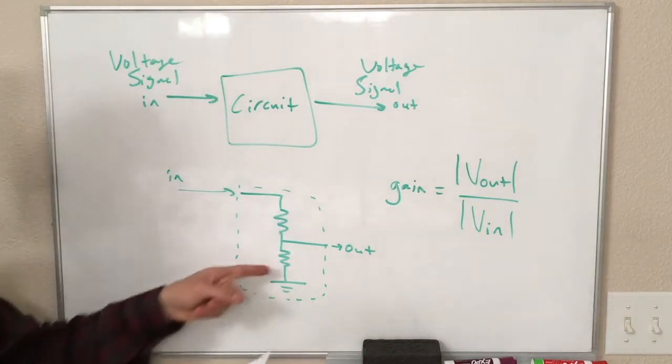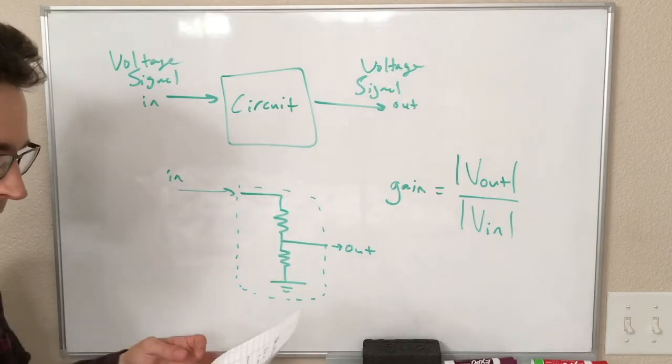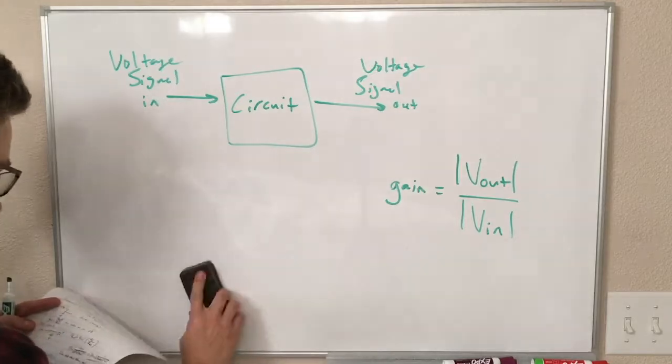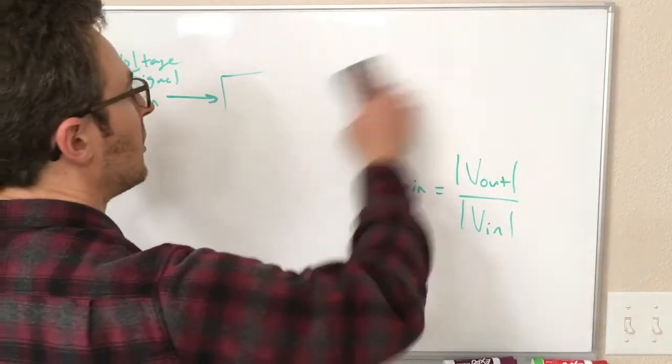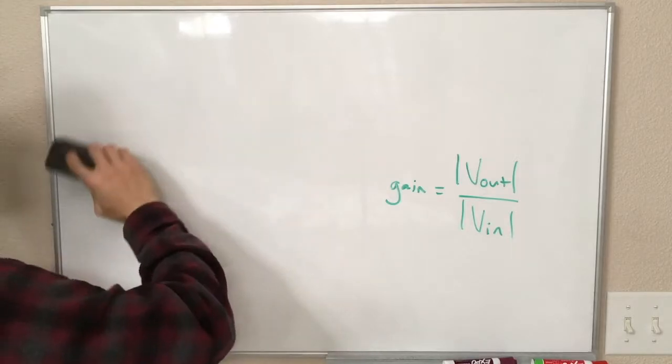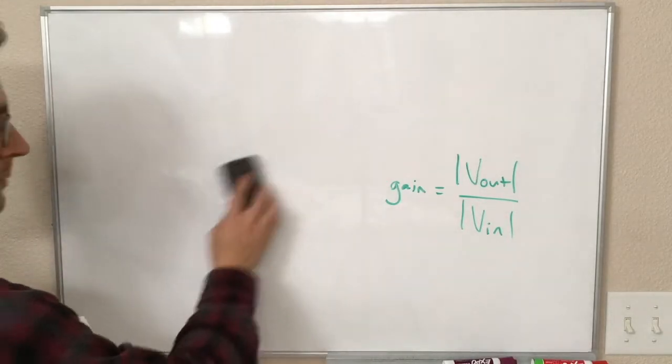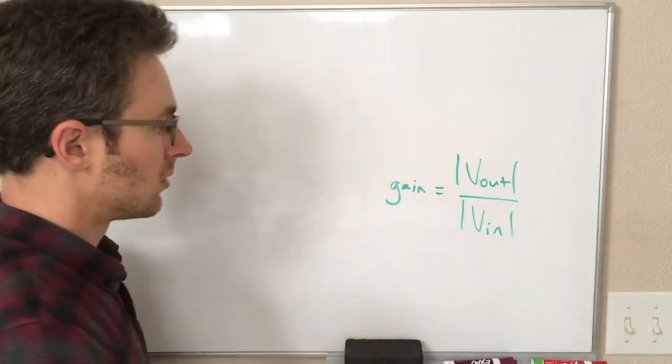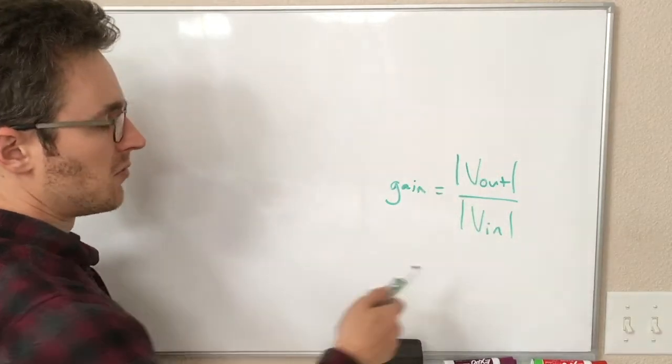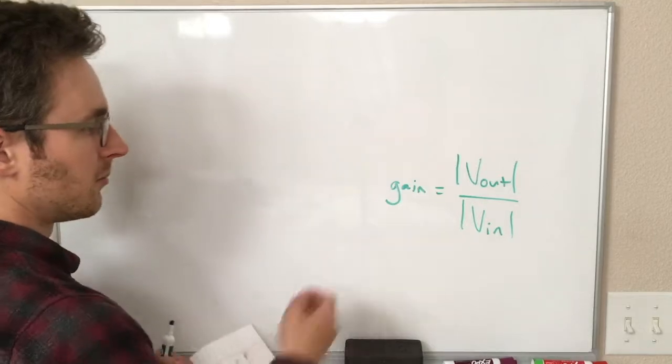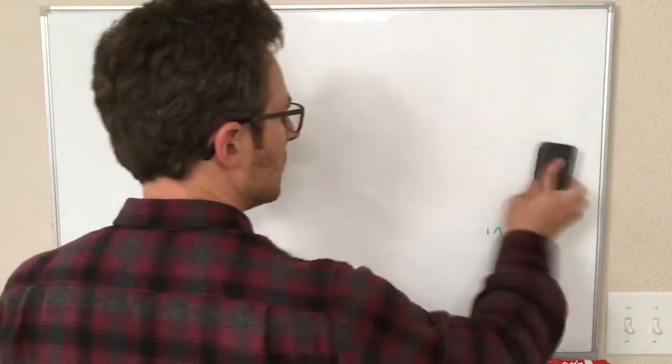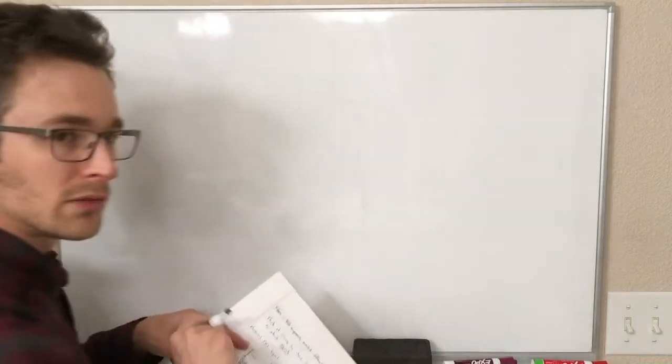For this we can figure out the gain with this little voltage divider equation, but we're going to not bother with this and move to a more complicated circuit. While I'm erasing, remember, we can express this gain as a ratio, or we can express that in dBs, decibels. The gain in decibels is 20 times the log of this ratio, 20 times the log of the gain fraction. Let's examine a circuit that we've seen before.